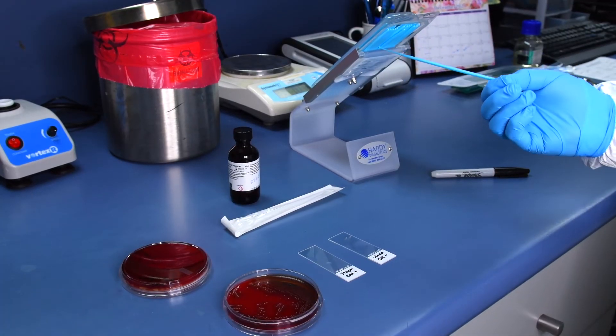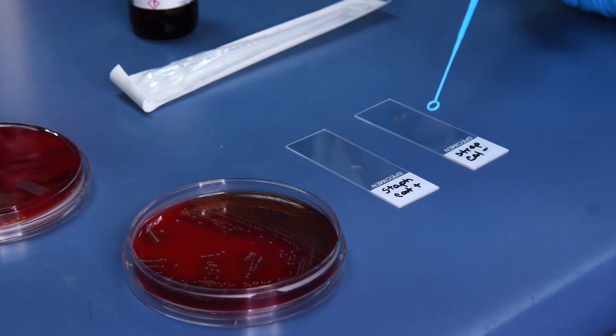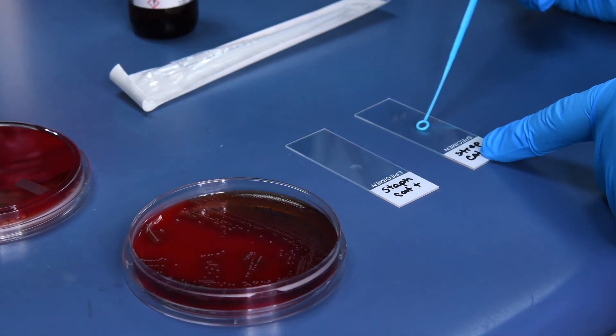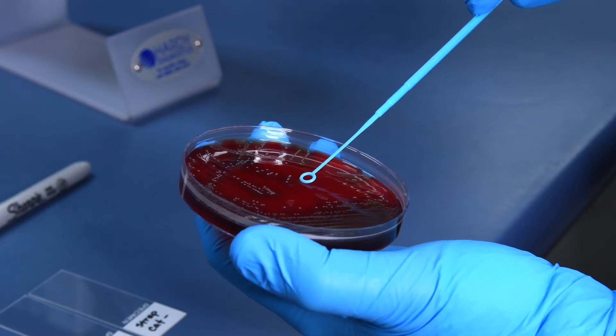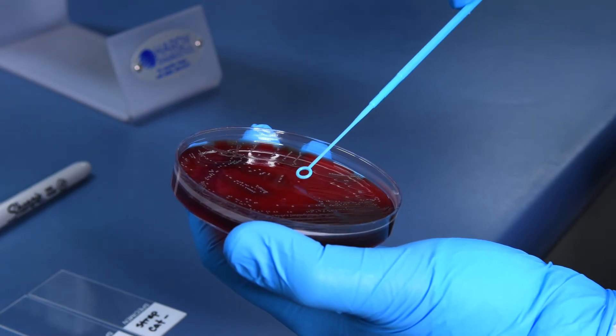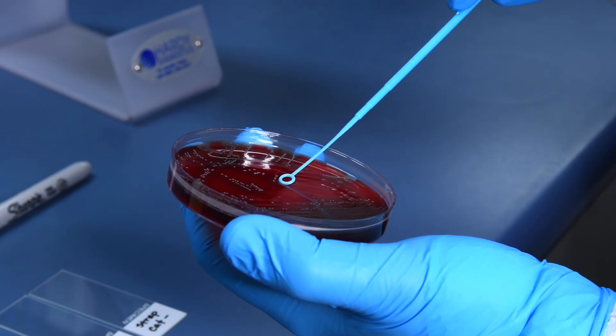Next, using a new sterile loop, touch a Streptococcus colony and smear it on the clean glass slide in one even layer. Avoid touching the agar that contain red blood cells. Red blood cells contain catalase and may cause a false positive result.